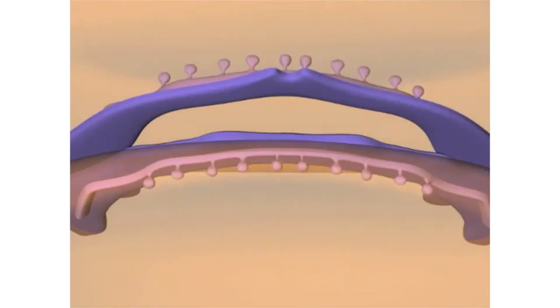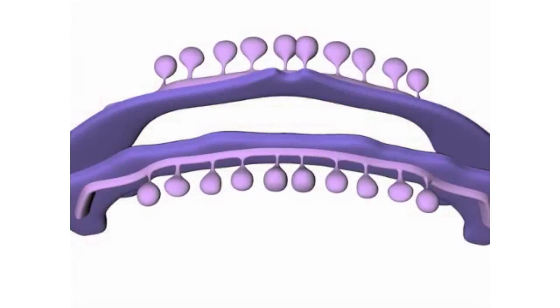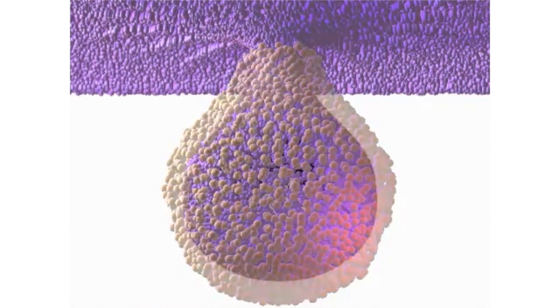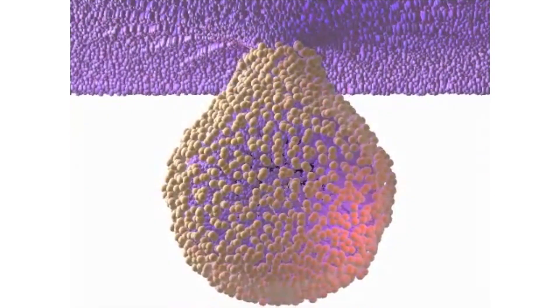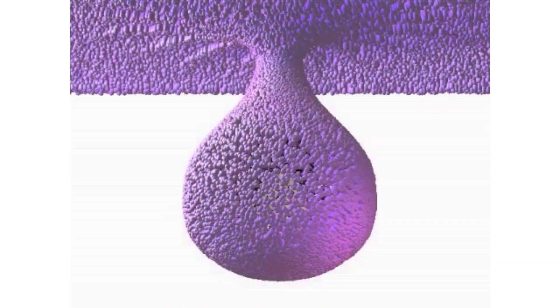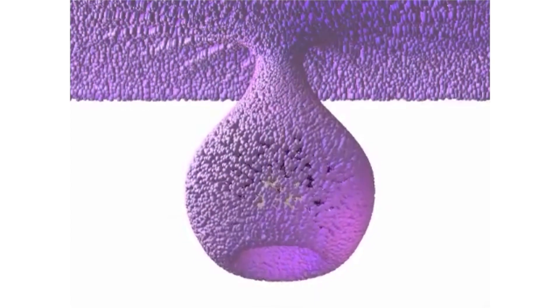Twenty small swellings, or placodes as we call them, can be seen on the dental lamina. These placodes correspond to the twenty future deciduous teeth, while the permanent teeth develop on the lingual extension of the dental lamina, which is termed the successional lamina. However, it must be noted that the permanent molars develop on the dental lamina itself — that is, on the posterior extension of the dental lamina, or posterior to the deciduous molars. These placodes now start proliferating into the underlying ectomesenchyme and assume the shape of a bud, which is actually the enamel organ, which will eventually give rise to the enamel of the tooth.